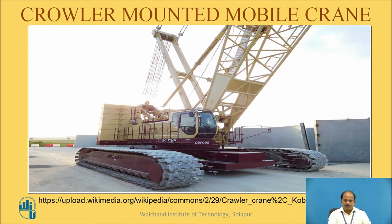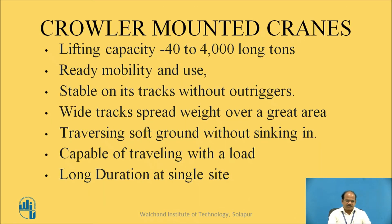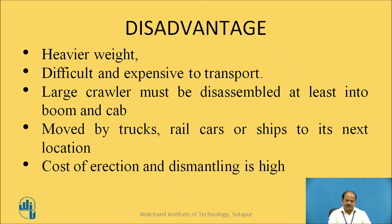This is a sketch of a crawler mounted mobile crane. Whenever a crane moves from one location to another, there are two possibilities: crawler or tire. Here, crawlers are provided at two locations, and the base gives strong transfer of load onto the ground below. Lifting capacity of crawler cranes ranges from 40 tons to 4000 tons. Mobility and speed are limited. The crane is stable on track without outriggers, and its wide track spreads weight over a greater area; it is also capable of travelling with a load. Disadvantages include very heavy weight and difficult, expensive transport. Large crawlers must be disassembled into at least boom and cab, then moved by truck, rail, car or ship. The cost of erection and dismantling is very high.